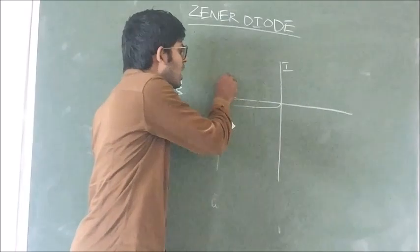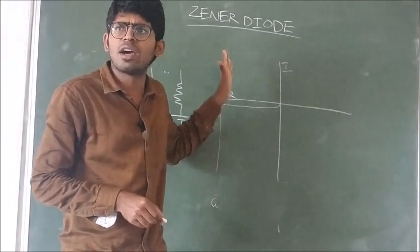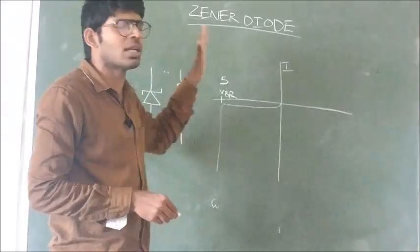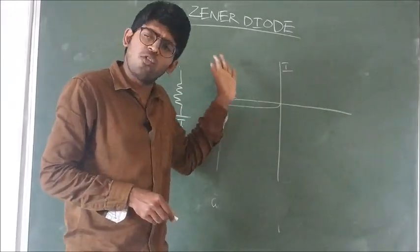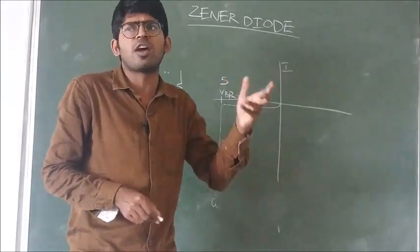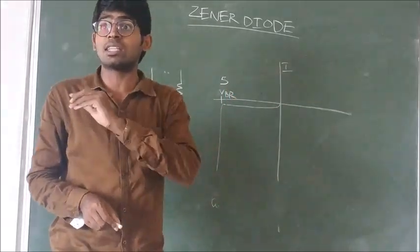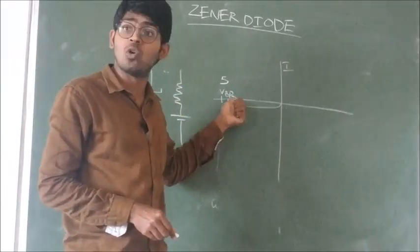Assume the Zener breakdown voltage is 5 volts. Until 5 volts, if we give 1, 2, 3, or 4 volts, the voltage across the Zener diode matches. After reaching 5 volts, if we give 6 volts, the Zener diode does not accept 6 volts.